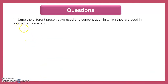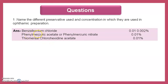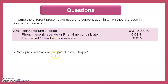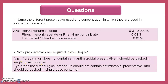Question 1: Name the different preservatives used and their concentrations in ophthalmic preparations. Benzalkonium chloride 0.002%, phenylmercuric acetate or phenylmercuric nitrate 0.01%, thiomersal, and chlorhexidine acetate 0.01%.